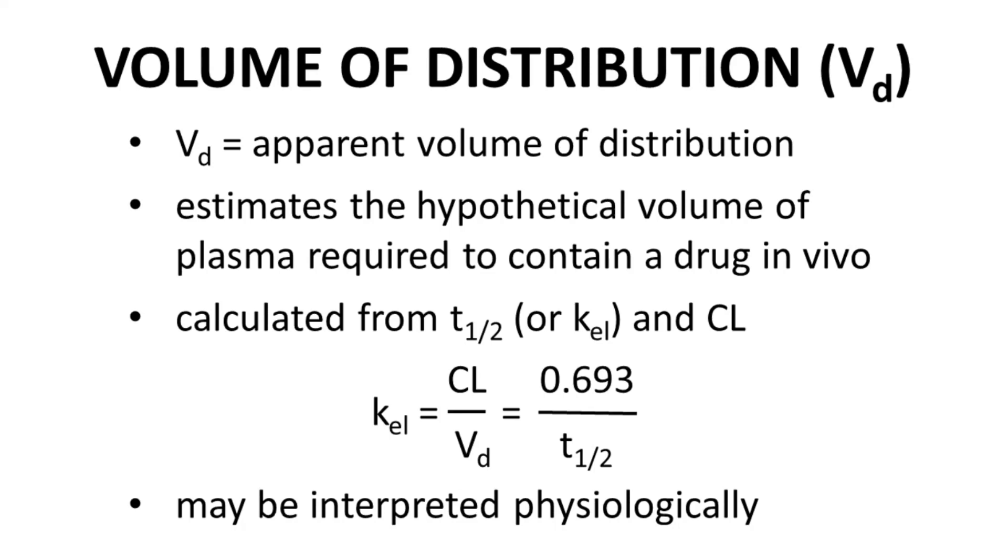The units on volume of distribution are normally either liters, liters of plasma. If clearance is reported on a per kilogram patient mass basis, then VD will also be liters of plasma per kilogram of patient mass. Volume of distribution is a key pharmacokinetic parameter.